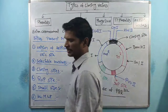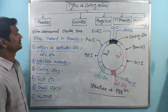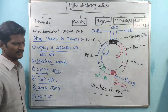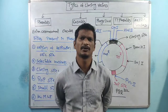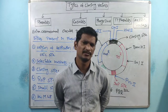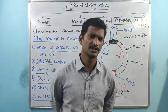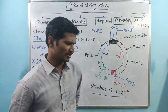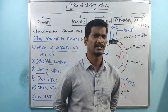Coming to the next topic is the types of cloning vectors. There are several types of cloning vectors. We know the meaning of cloning vectors — which carries our desired genes, and our desired gene will be replicated or multiplicated. These are called cloning vectors.